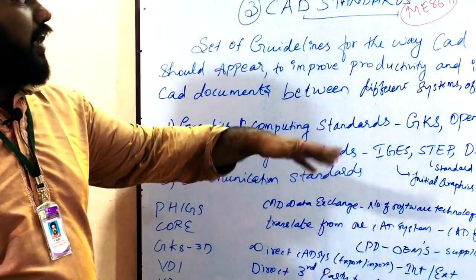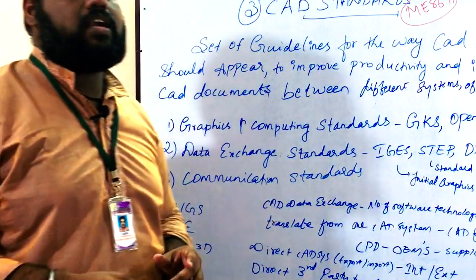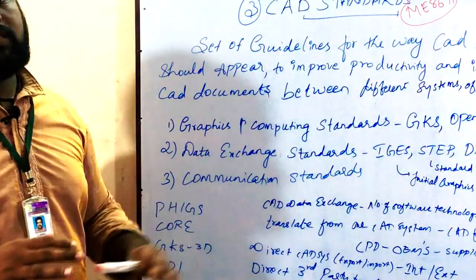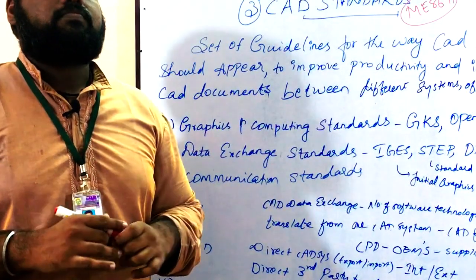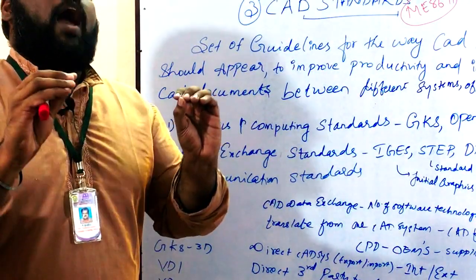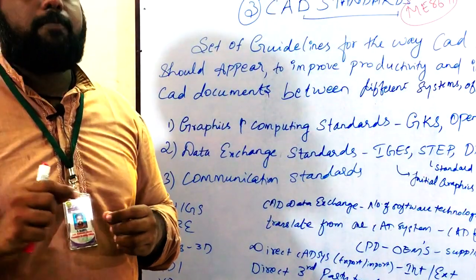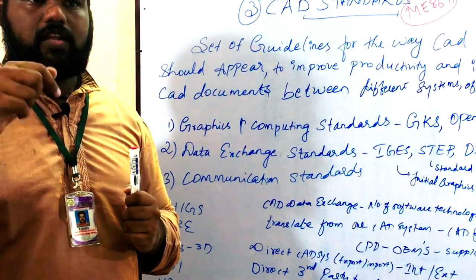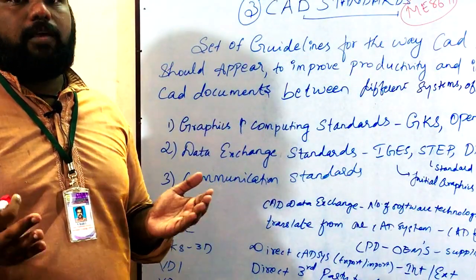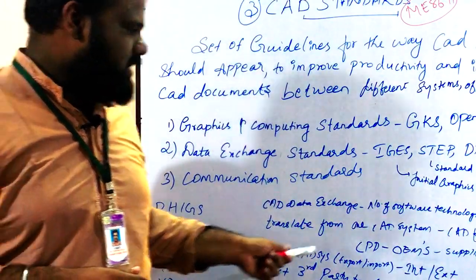CAD data exchange involves translating from one CAD system into another CAD system using CAD file formats. There are three systems: one is a direct CAD system — internal and external. The internal direct CAD system is when, within your own office, you save a file and your team can open and view it on the same system.